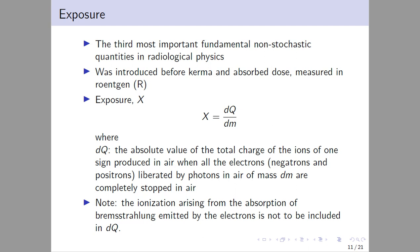Next is exposure, the last quantity. Exposure is the third most important fundamental non-stochastic quantity in radiological physics, and was introduced long before kerma. Exposure is defined as X = DQ/DM, where DQ is the absolute value of the total charge of ions of one sign produced in air. Note that ionization from bremsstrahlung is not included.